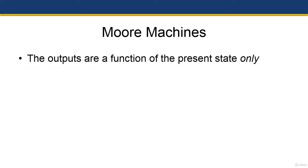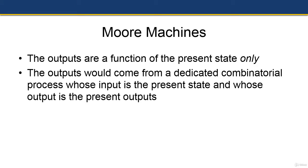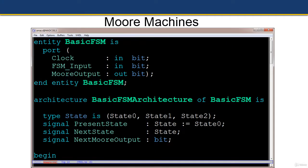The outputs of a Moore state machine are a function of the present state only. We can easily implement this using a dedicated combinatorial process whose input is the present state and whose output is the present outputs. If we wanted to register the output signals of a Moore state machine, we could use the same combinatorial process to feed the next portion of the sequential process — the combinatorial process would use the next state output.